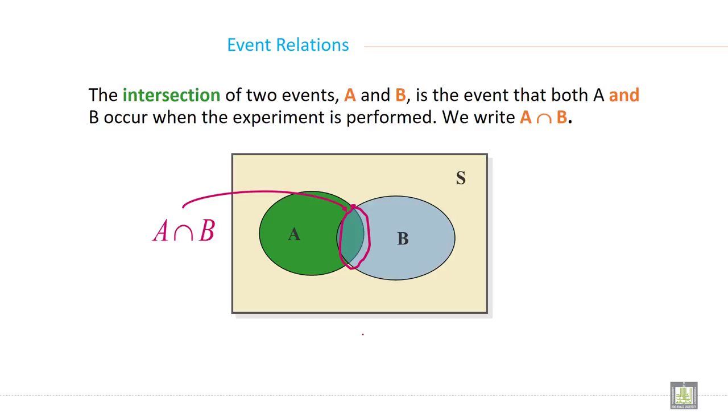Intersection. The intersection of two event A and B is the event that both A and B occur when the experiment is performed. We write A intersection B like this. And A intersection B area is this and written as this.